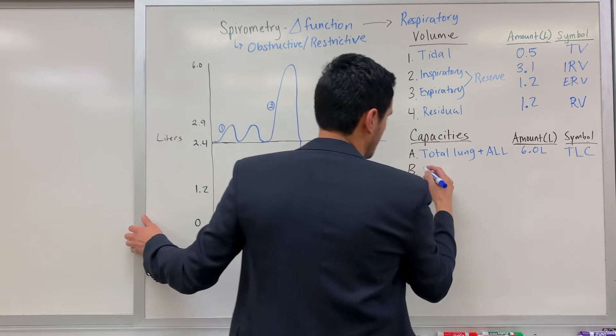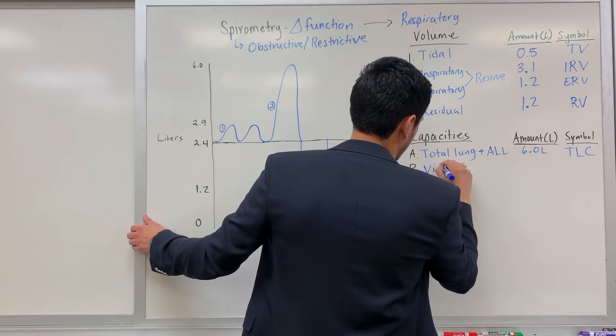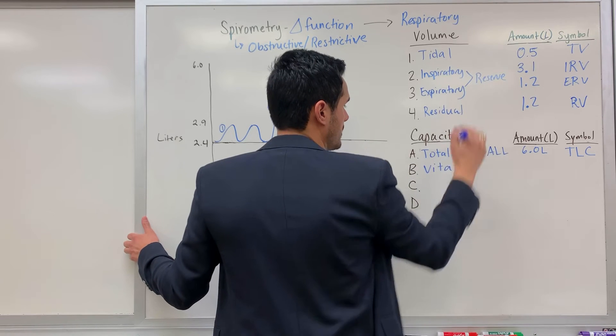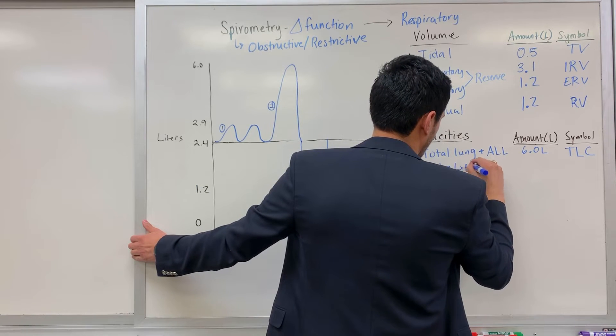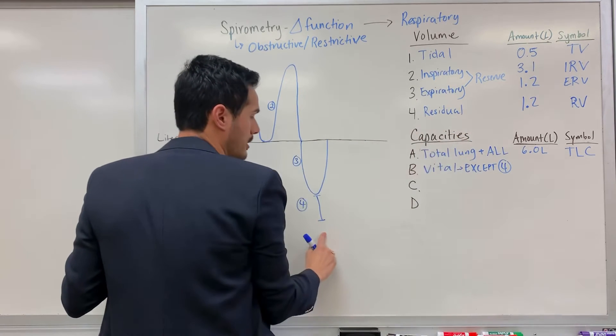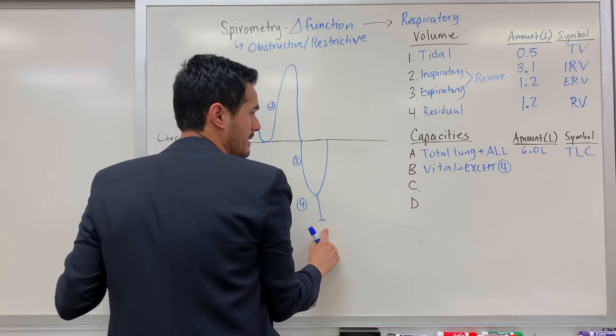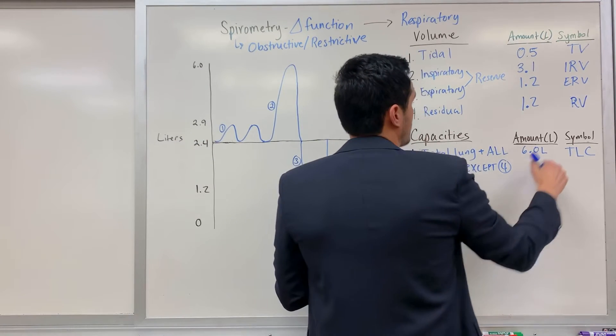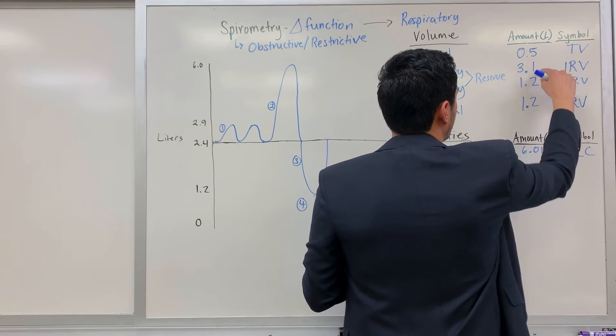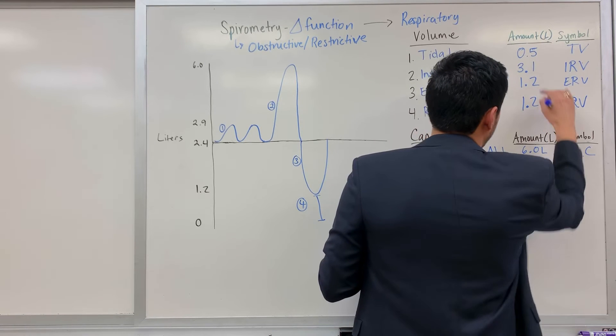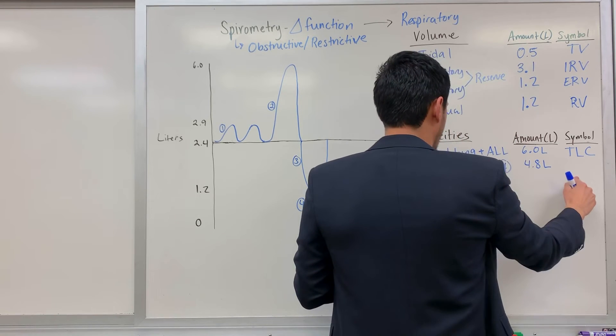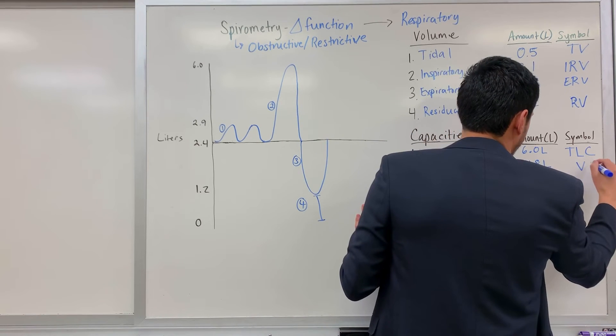Then you also have something known as the vital capacity. The vital capacity includes all of these numbers except number four. Number four is the residual capacity, the amount that stays within the lungs. If we add these values up, 3.6 plus 1.2, this is going to be 4.8 liters, and this is denoted as VC, vital capacity.